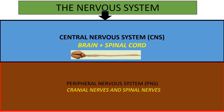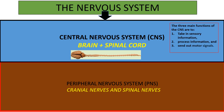The central nervous system consists of the brain and the spinal cord, and performs three major functions. These functions are to take in sensory information and to process that information which has been taken in.